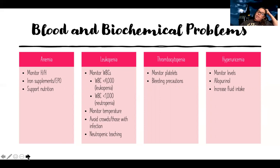For low white blood cells or leukopenia, leukopenia is classified as a white blood cell count less than 4,000, whereas neutropenia is a white blood cell count less than 1,000. These patients are at high risk for infection, so I want to monitor their temperature, teach them to avoid crowds and people with infection, and provide neutropenic teaching.